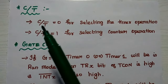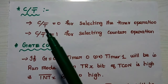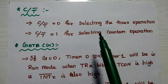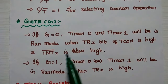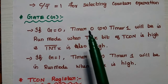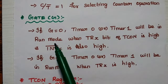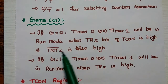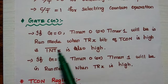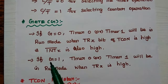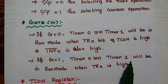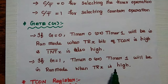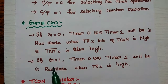The next bit is C/T̄, where C represents counter and T represents timer. If C/T̄ = 0, it selects timer operation; if C/T̄ = 1, it selects counter operation. The next bit is the Gate signal. If Gate = 0, Timer 0 or Timer 1 will be in run mode when the run control bit of TCON is high and the external interrupt signal INT is also high — both bits must be high. If Gate = 1, the timer will be in run mode when the run control bit is high, with no need for the external hardware INT signal.